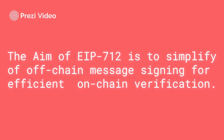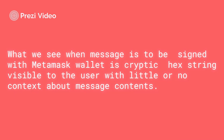The main aim of EIP-712 is basically to simplify off-chain signing of messages for efficient on-chain verification. The best way to understand this is to see what happens when we do signing without EIP-712 versus with EIP-712. Without EIP-712, in the normal signature process, we are essentially signing a cryptic hex string that is visible to the user but provides no context about the message contents.